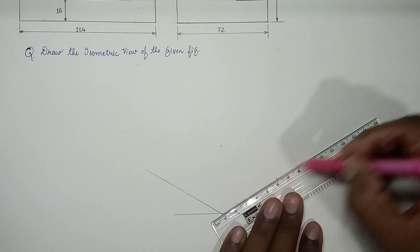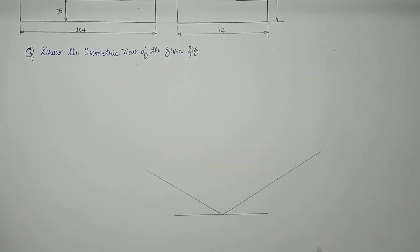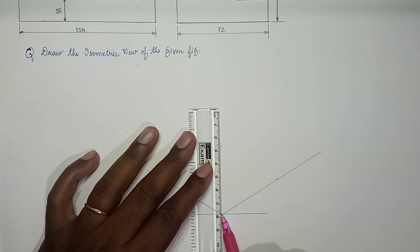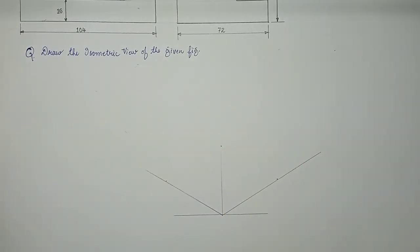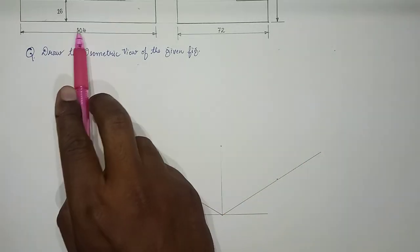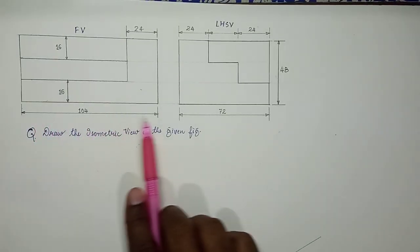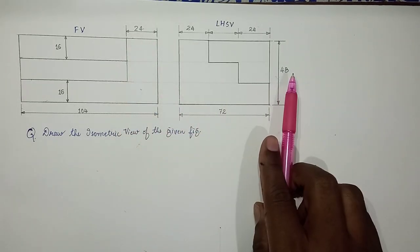So this is length along x, this is along y, and this is along z. This is the front view we have just seen - this is 104 and what is the height? The height is 48.